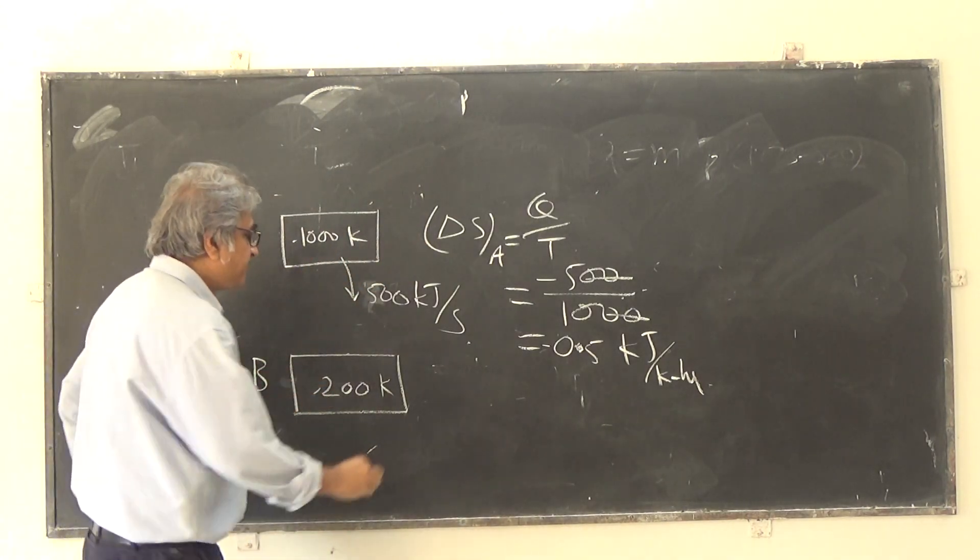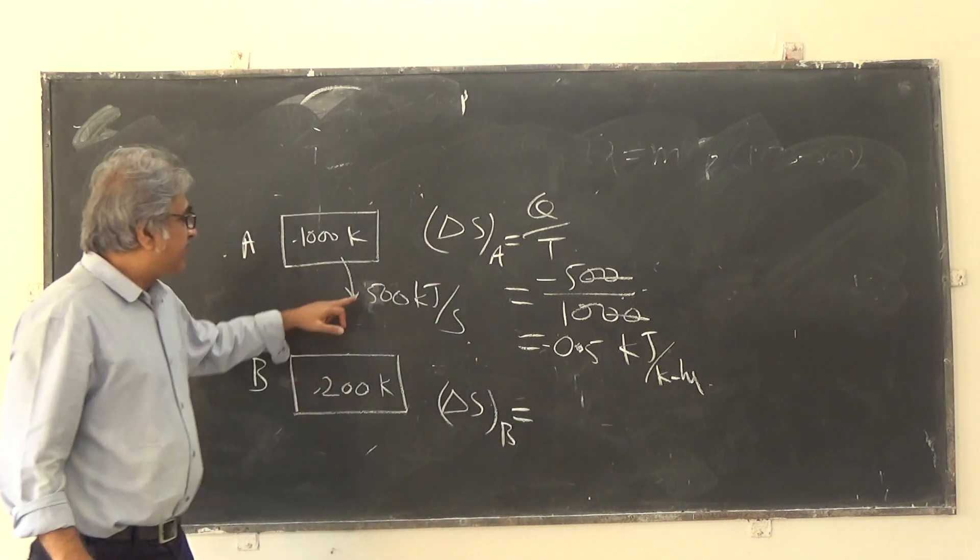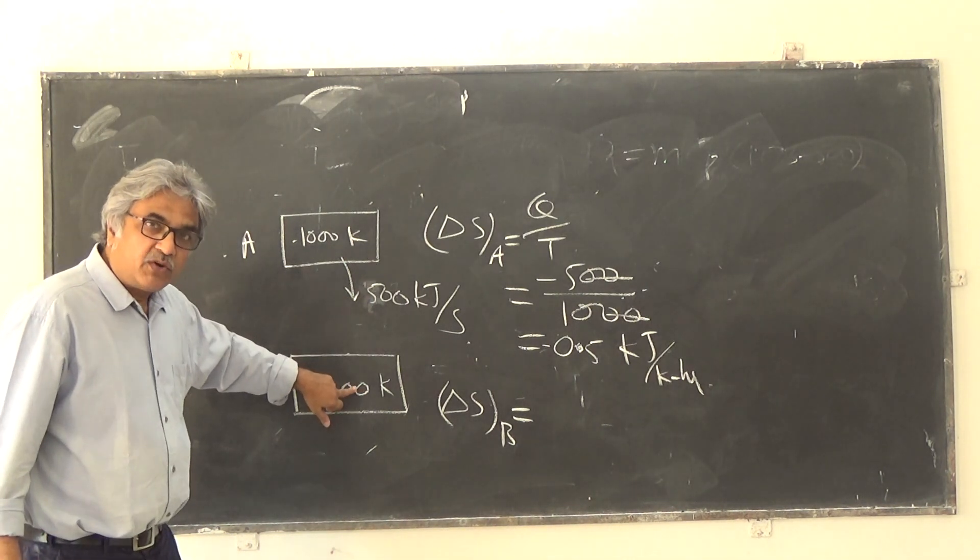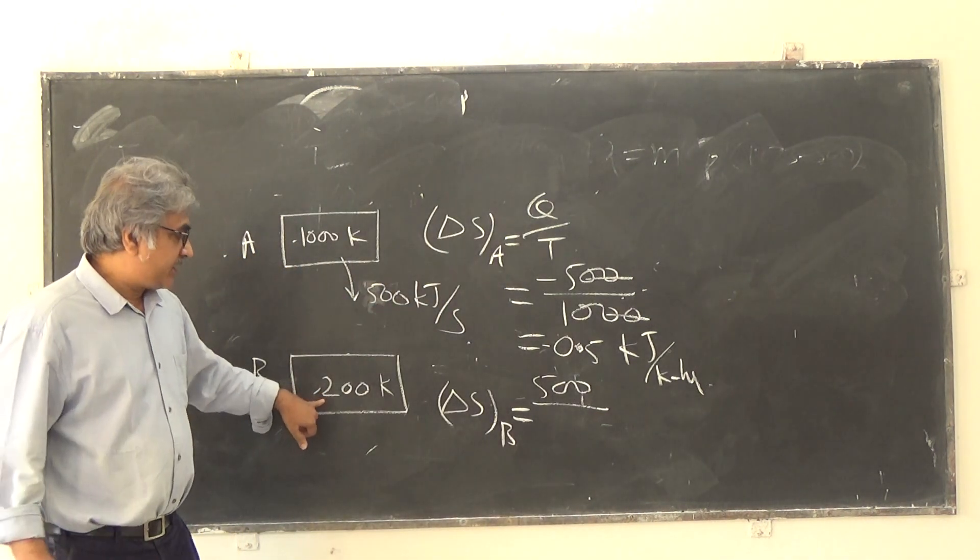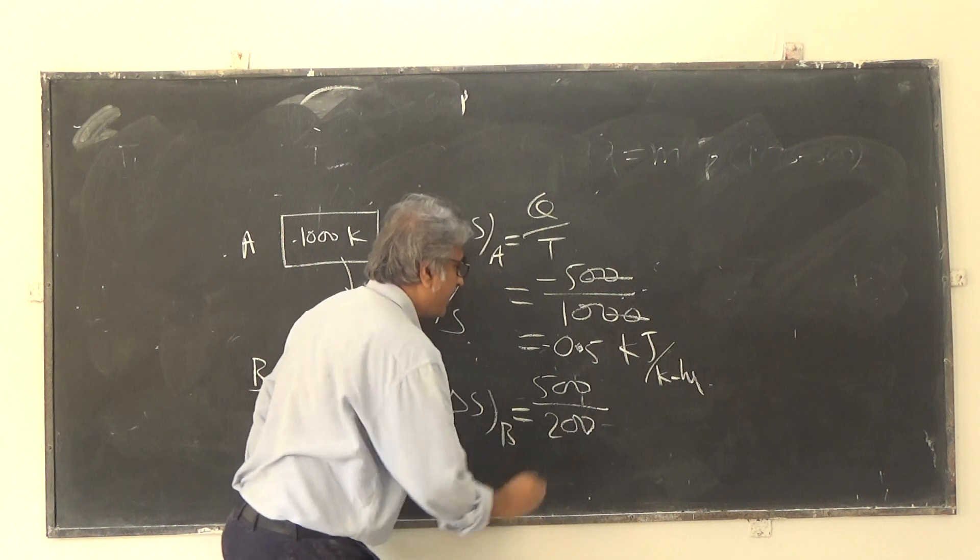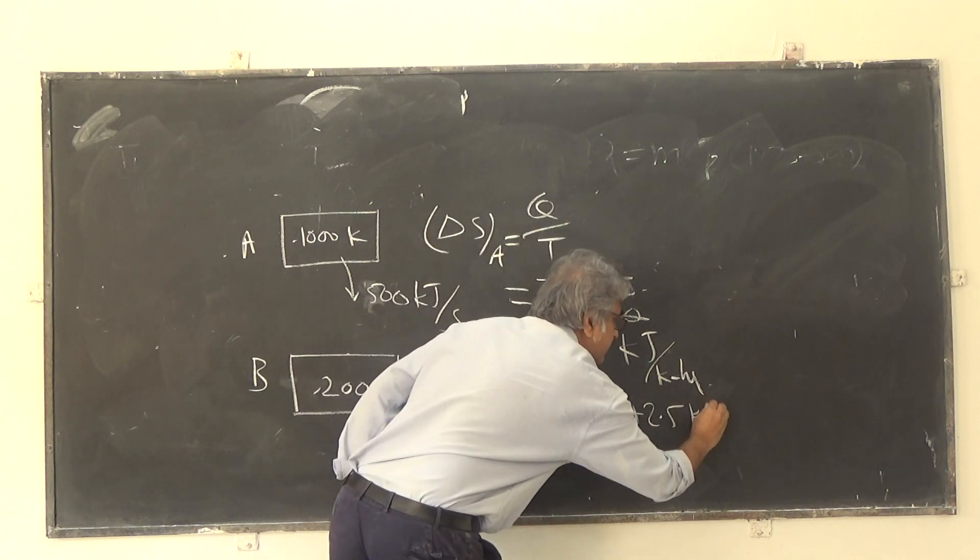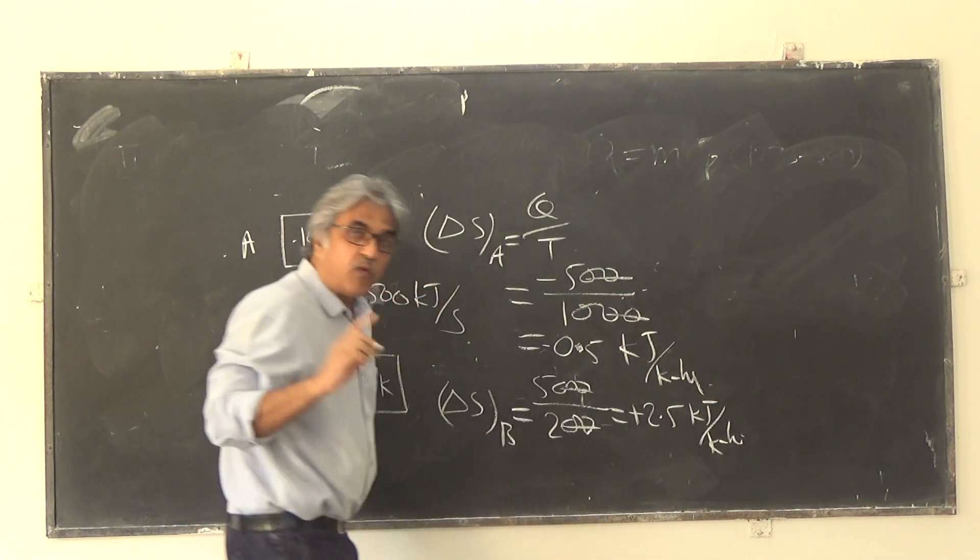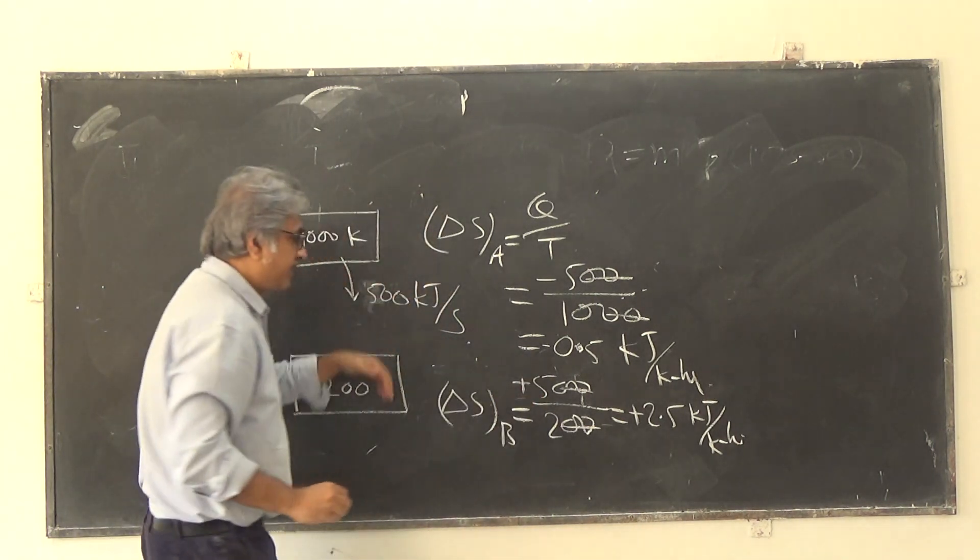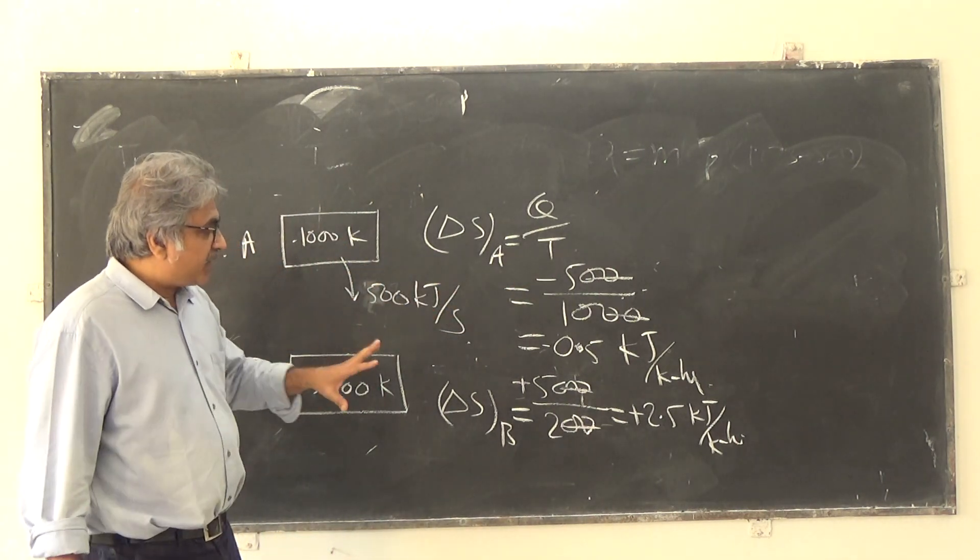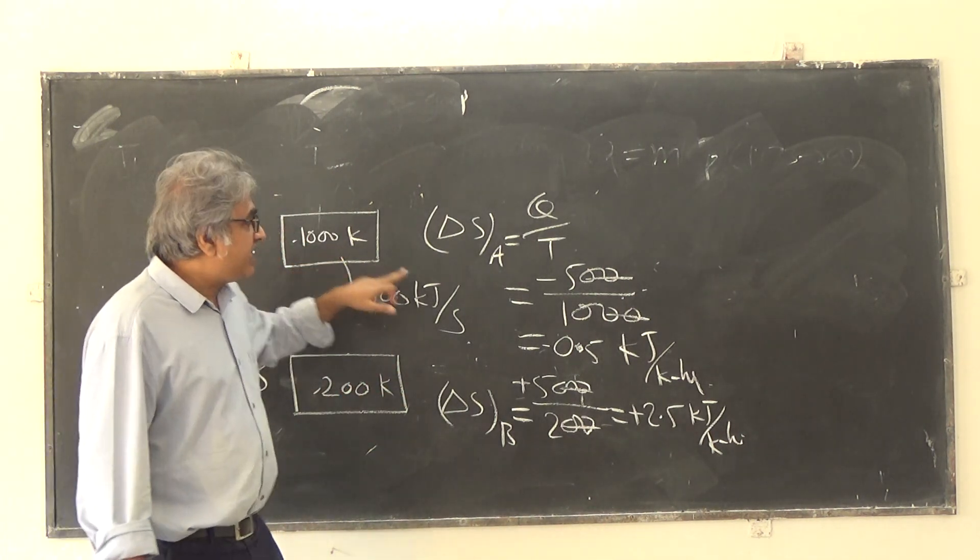What about entropy change of this body? By the same logic, delta S_B will be the same amount of heat is coming over here, so this is Q by T. So it is 500 divided by 200. So this will be 2.5, and that will be plus kJ per Kelvin hour. Why will it be plus? Because this body is receiving the heat, so this 500 is plus. This was negative.